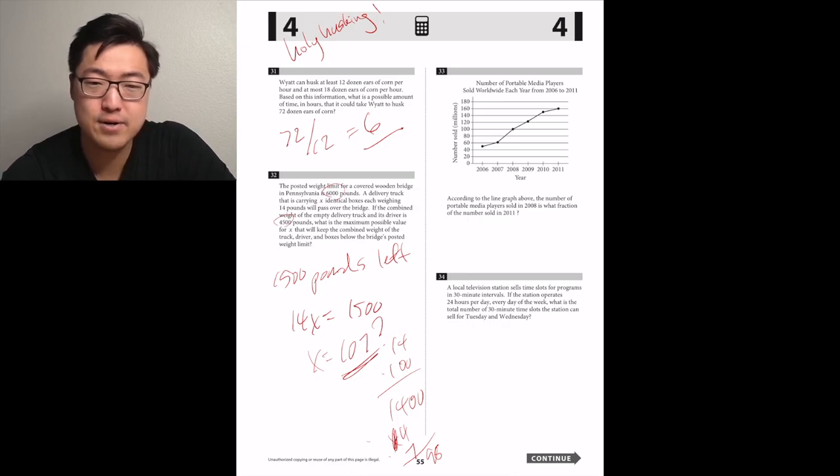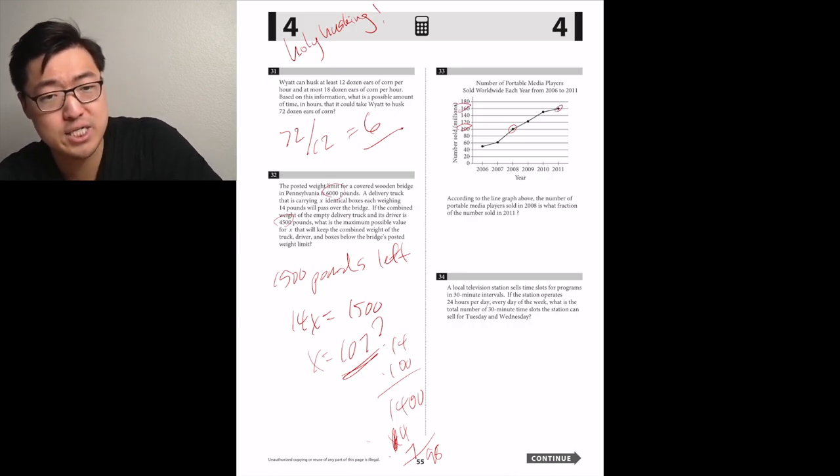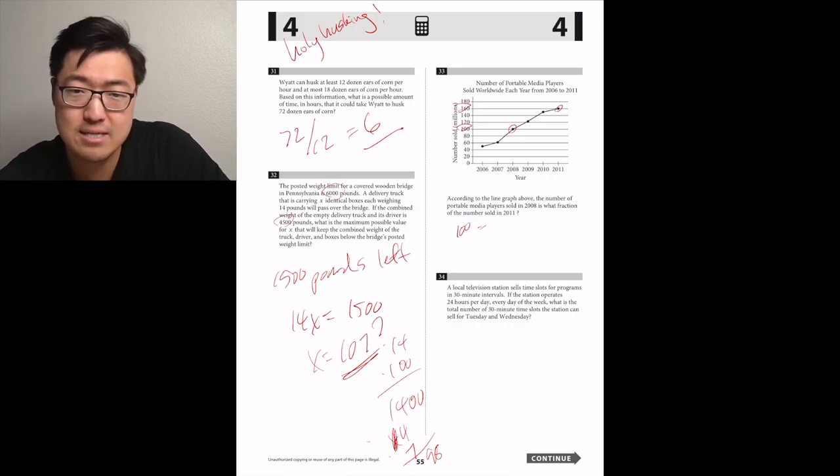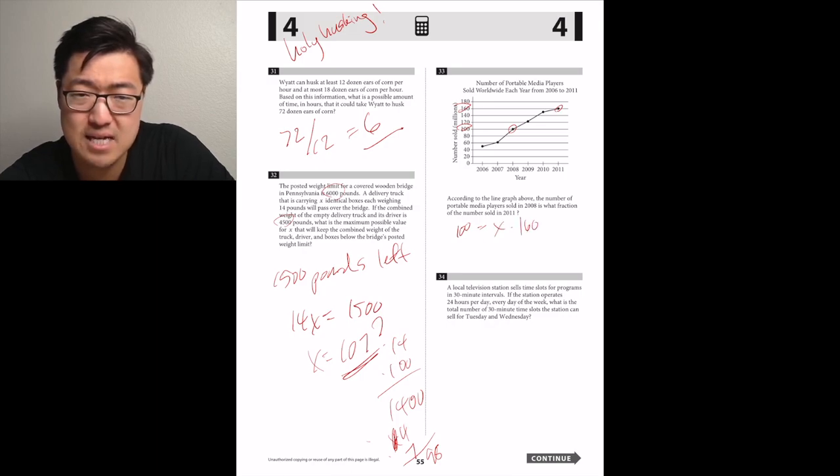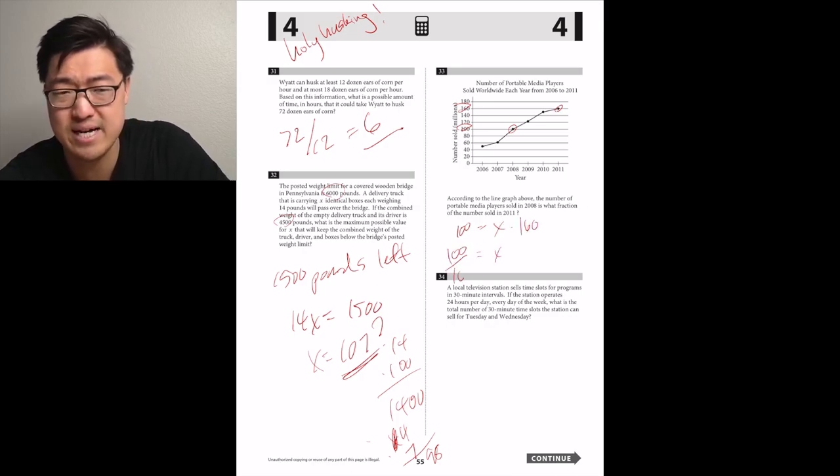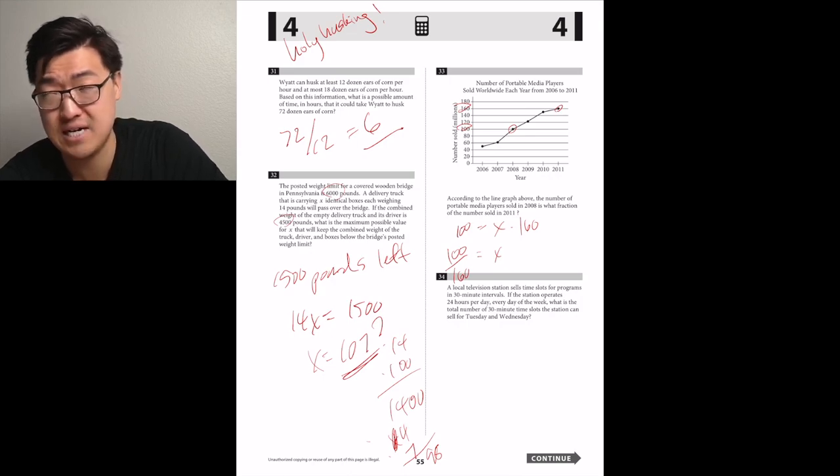According to the line graph above the number of portable media players sold in 2008, 2008 is 100. So 100 is what fraction of the numbers sold in 2011 of 160? So 100 is equal to X times 160. So X is 100 over 160, so 10 over 16, five eighths.